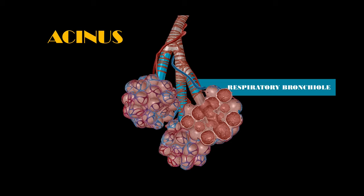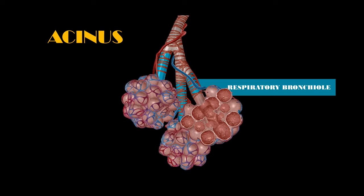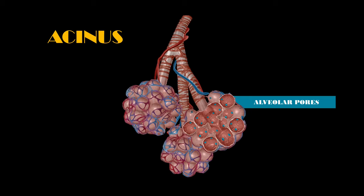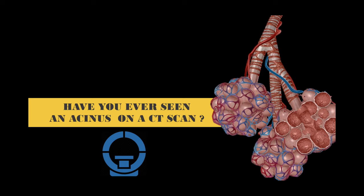This is the respiratory bronchiole. This is the first part of the acinus and the first part of the lung to present alveolated walls. These are the alveolar ducts. These are the alveolar sacs. These are the cavities inside the alveolus. And these pores are the internal communication between the alveoli. And now I have one question for you. Have you ever seen an acinus on a CT scan?